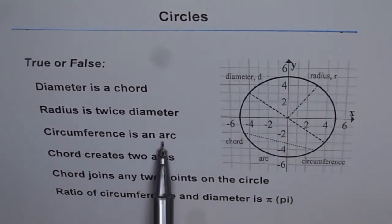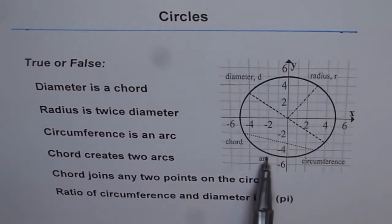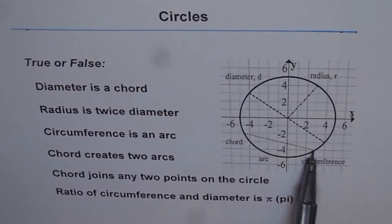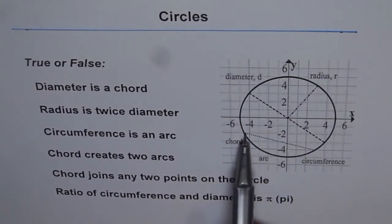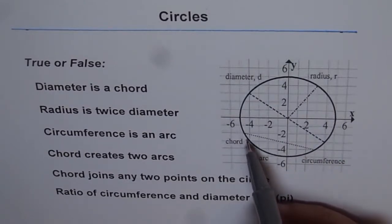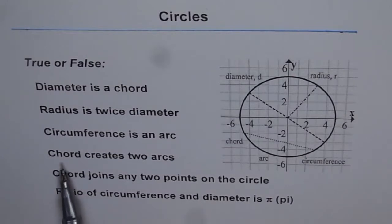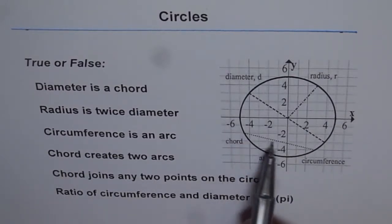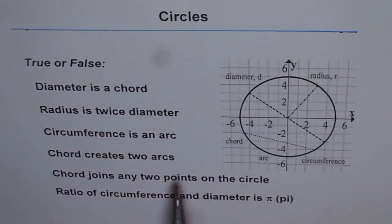Circumference is an arc. Arc is something between two points of the chord, right? So like this is an arc. Circumference is all the peripheral distance along the periphery of the circle. Chord creates two arcs. So this is a chord. Does it create two arcs? That is the question.